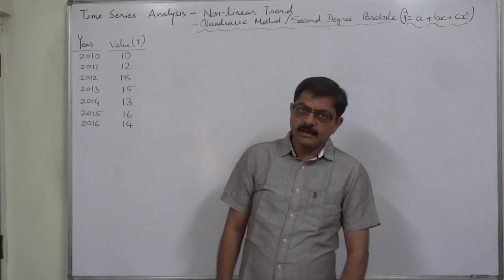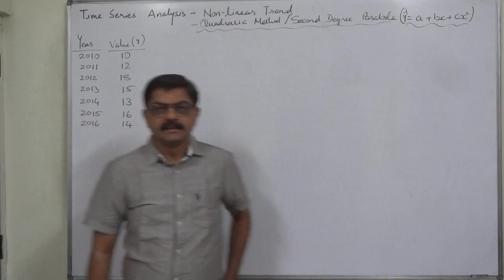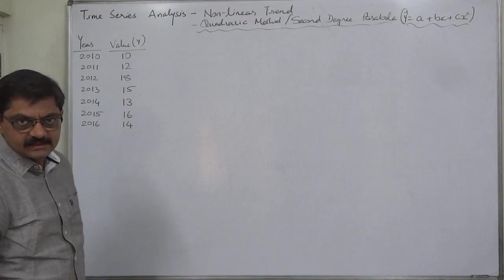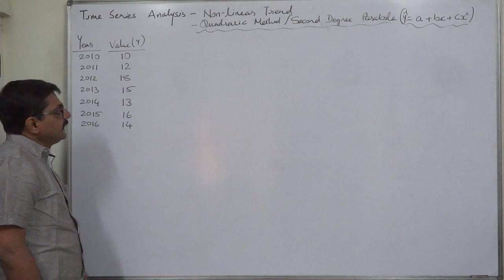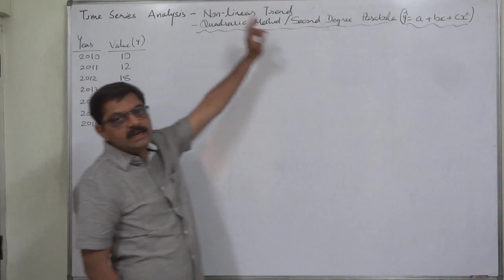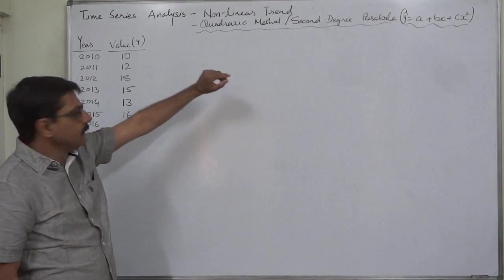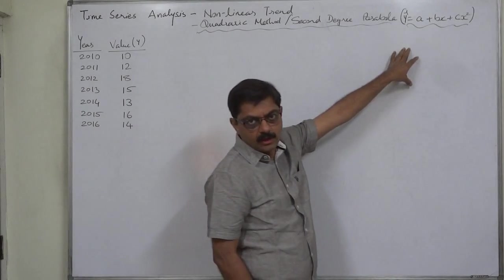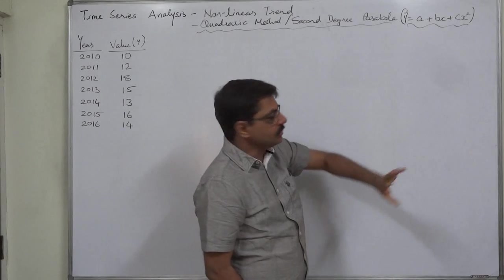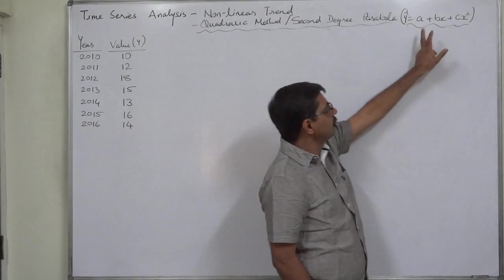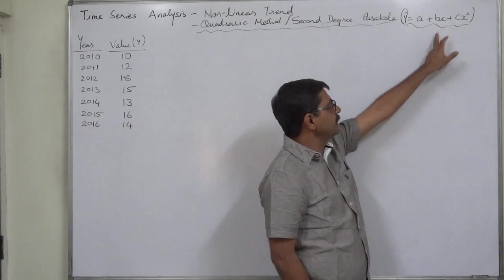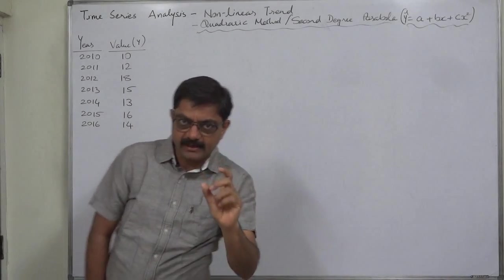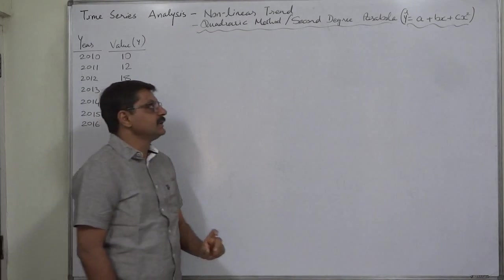Hello and welcome. Namaskar. In time series analysis we are going to discuss the first method in case of fitting of nonlinear trend, and that is the quadratic method or second degree parabola. The standard equation of the trend will be y equals to a plus bx plus cx squared. Because of the x squared term, this is a nonlinear trend.